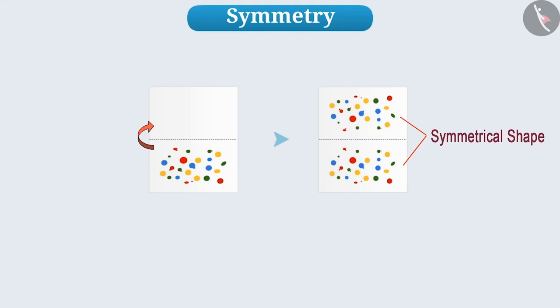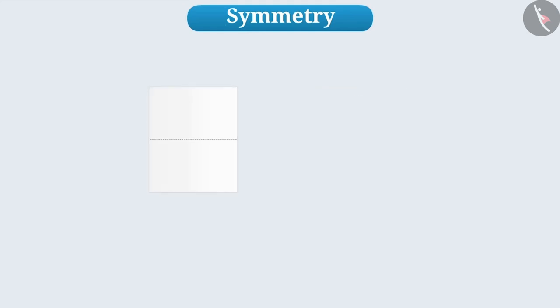Let's do another fun activity. Here also, we take a rectangular paper and fold it into two equal parts. Now, on one part, we will place a thread dipped in ink. Then, we will put the second part on the top and press it.